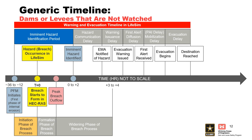The remainder of the warning and evacuation timeline in LifeSim follows. The time periods can move relative to each other and are unique to each emergency management agency, so they are not shown to a specific time. In a relative sense, the time periods for the remainder of the warning and evacuation timeline occur after breach formation and peak breach outflow. The available time to reach a safe destination can be significantly reduced for this scenario, resulting in greater likelihood of fatalities.